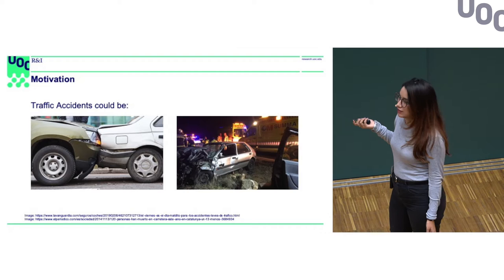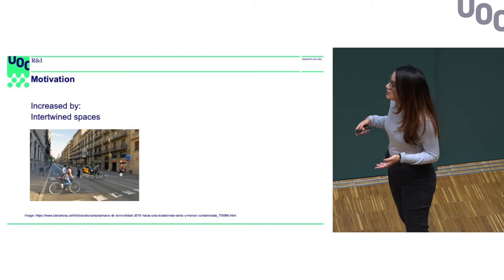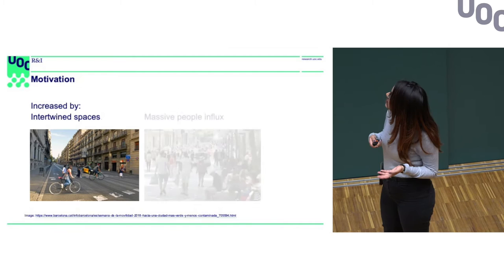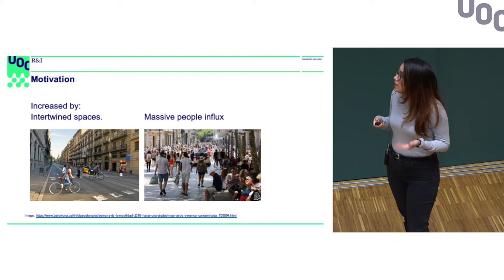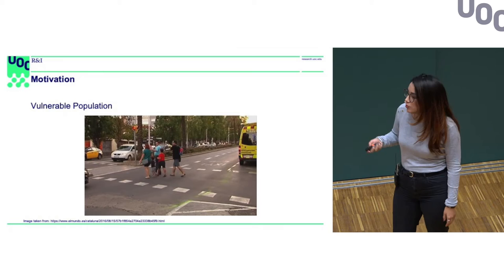In a city like Barcelona, where cars, bikes, pedestrians, and even scooters are sharing the same space, and with the massive influx of people, road safety leaves pedestrians as the most vulnerable population.